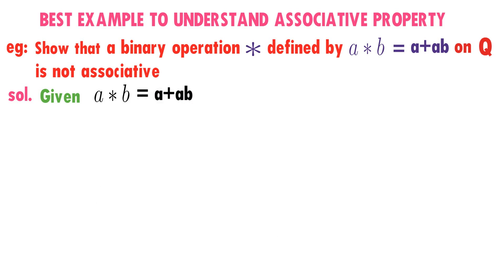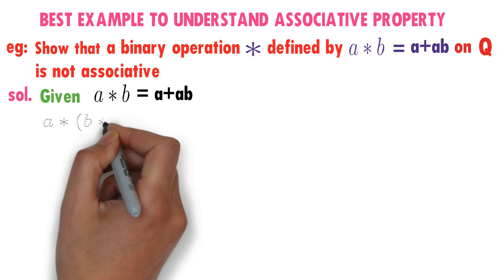Observe here carefully. In a★b, a is the first element and b is the second element. So a★b is defined as the first element plus the product of the two elements.